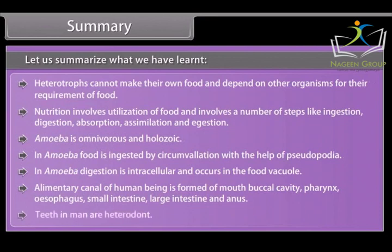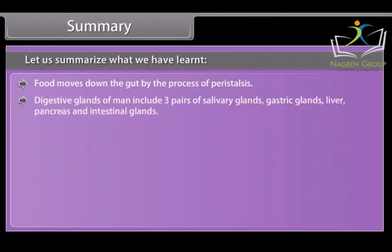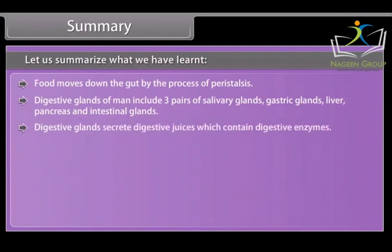Teeth in man are heterodont. Food moves down the gut by the process of peristalsis. Digestive glands of man include 3 pairs of salivary glands, gastric glands, liver, pancreas, and intestinal glands, which secrete digestive juices containing digestive enzymes.